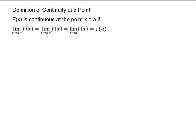Definition of continuity at a point: f of x is continuous at the point x equals a if the left-sided limit at a equals the right-sided limit at a equals the double-sided limit at a equals f of a.